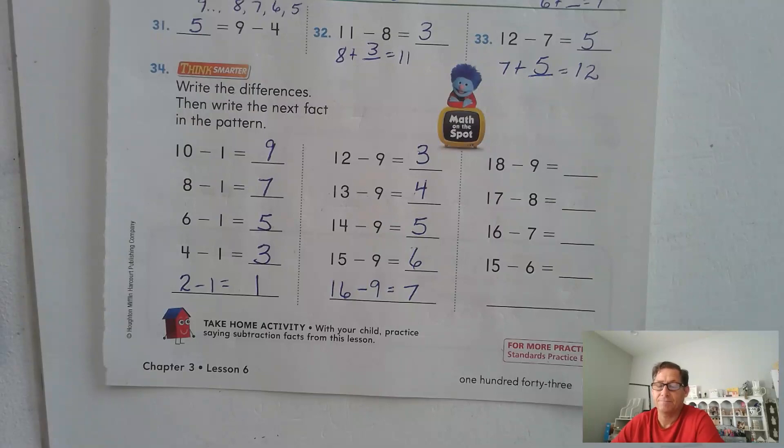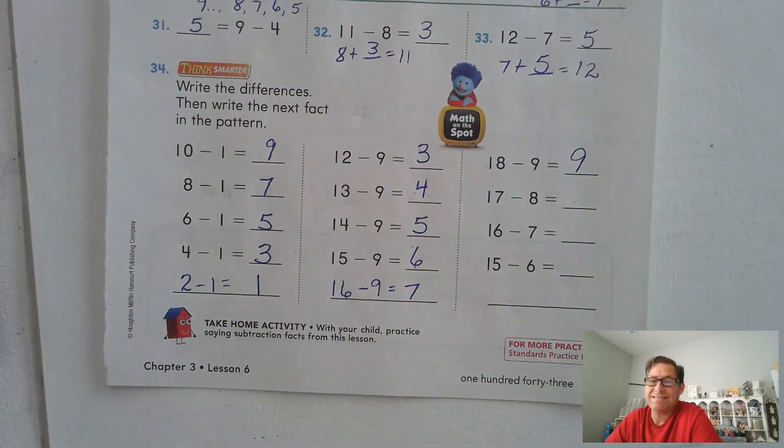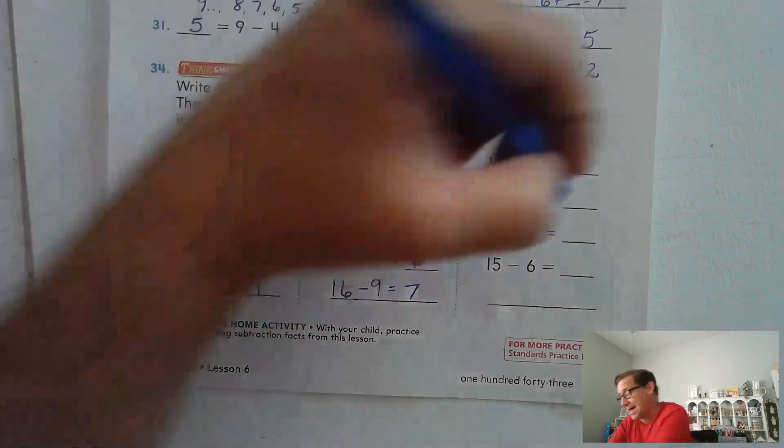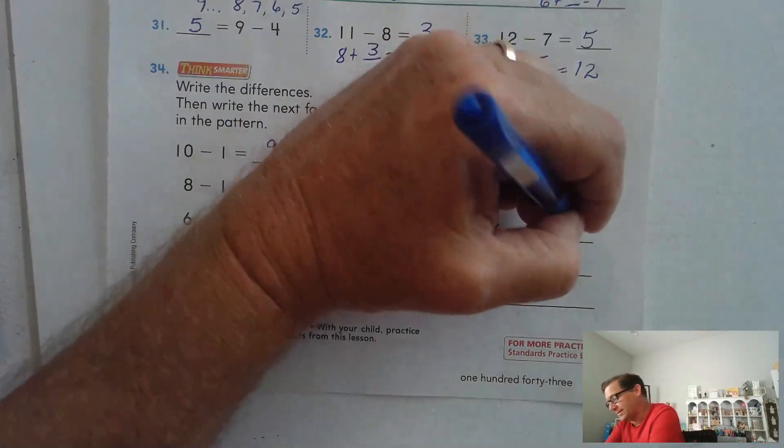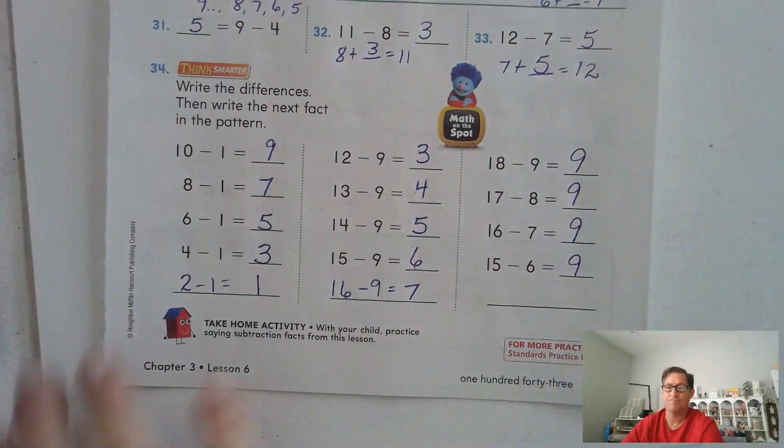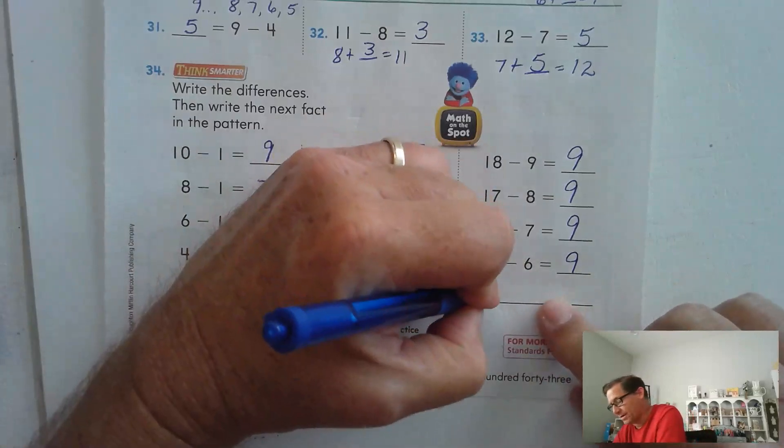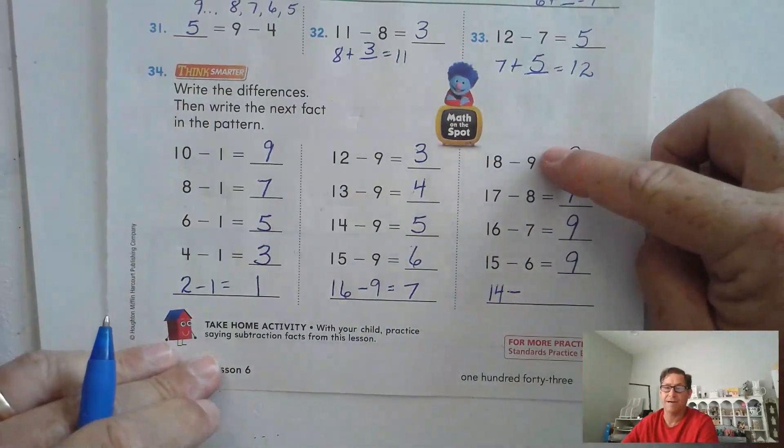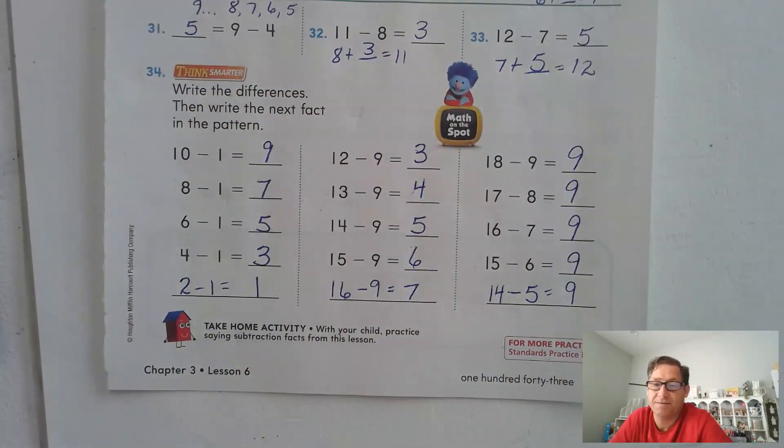18 minus 9. 9 plus what is 18? 9. That's just a double fact, right? 17 minus 8. Well, I know that 8 plus 8 is 16, so I would need to go one more, so 9. 16 minus 7. Well, I know 7 plus 7 is 14, so I'd have to go two more. 7 plus 2 is 9. What do you notice the pattern? All the differences equal 9. So let's look at the pattern: 18, 17, 16, 15. So this one's probably going to be 14 minus 9, 8, 7, 6, 5. And that's going to give us the difference of 9.